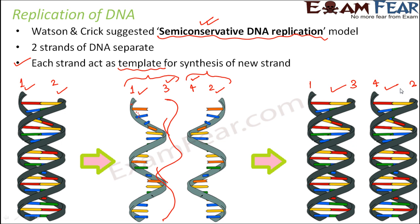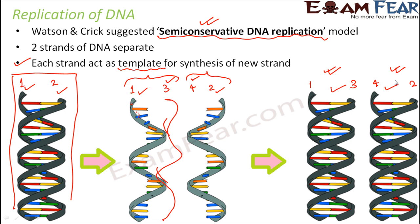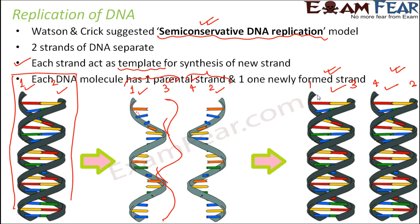So why was it named semi-conservative? Conservation means to preserve or keep something intact, and semi means half. Half of each new DNA molecule is the original parental strand. If you look at the two new DNA molecules, in both of them half the DNA is exactly the same as was present in the parent. The rest half has been newly synthesized. So half has been preserved and half is new — that is why it is called semi-conservative DNA replication. Each DNA molecule has one parental strand and one newly formed strand.